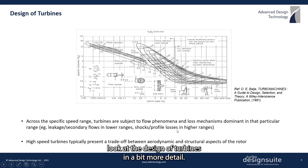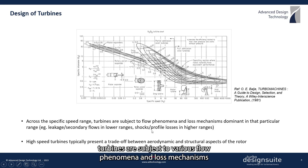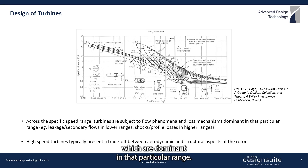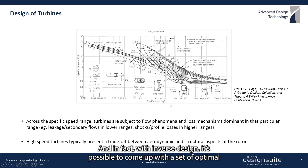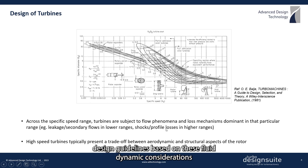Now let's look at the design of turbines in more detail. Across the specific speed range, turbines are subject to various flow phenomena and loss mechanisms dominant in that particular range. As you can see in this specific speed chart, leakage and secondary flows are more dominant in the lower ranges, whereas shocks and profile losses take priority in the higher ranges. With inverse design, it's possible to come up with a set of optimal design guidelines based on these fluid dynamic considerations to reduce the dominant flow losses for your turbine.